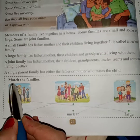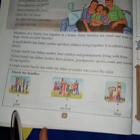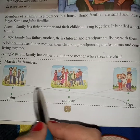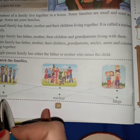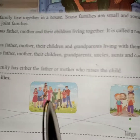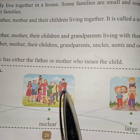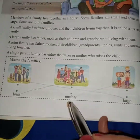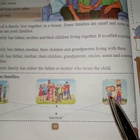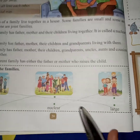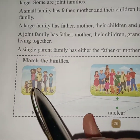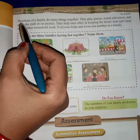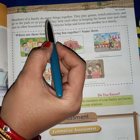नीचे दिया गया है, देखो बच्चो — match the families. Joint family कौन सा है, nuclear family कौन सा है, और large family कौन सा है — वो हमको match करना है। Joint family देखो जहाँ पे ममी, पापा, अंकल, आंटी, दादा, दादी सब रहते हैं — उसको joint family बोलते हैं। Nuclear family देखो जहाँ पे ममी, पापा और दो बच्चे होते हैं। Large family जहाँ पे ममी, पापा, उनके बच्चे और grandparents होते हैं।